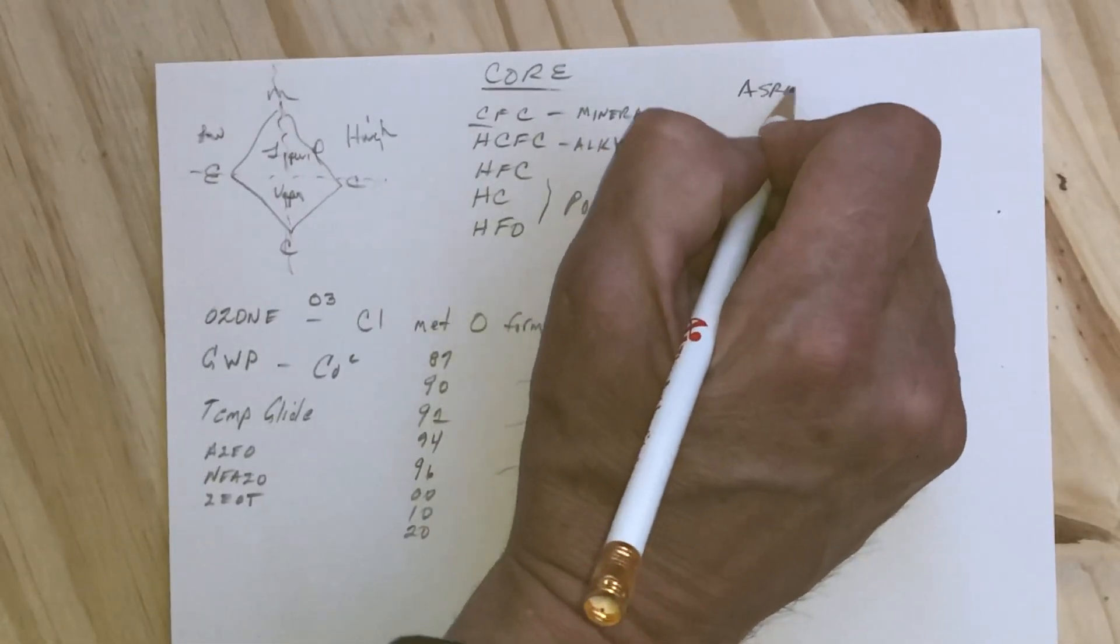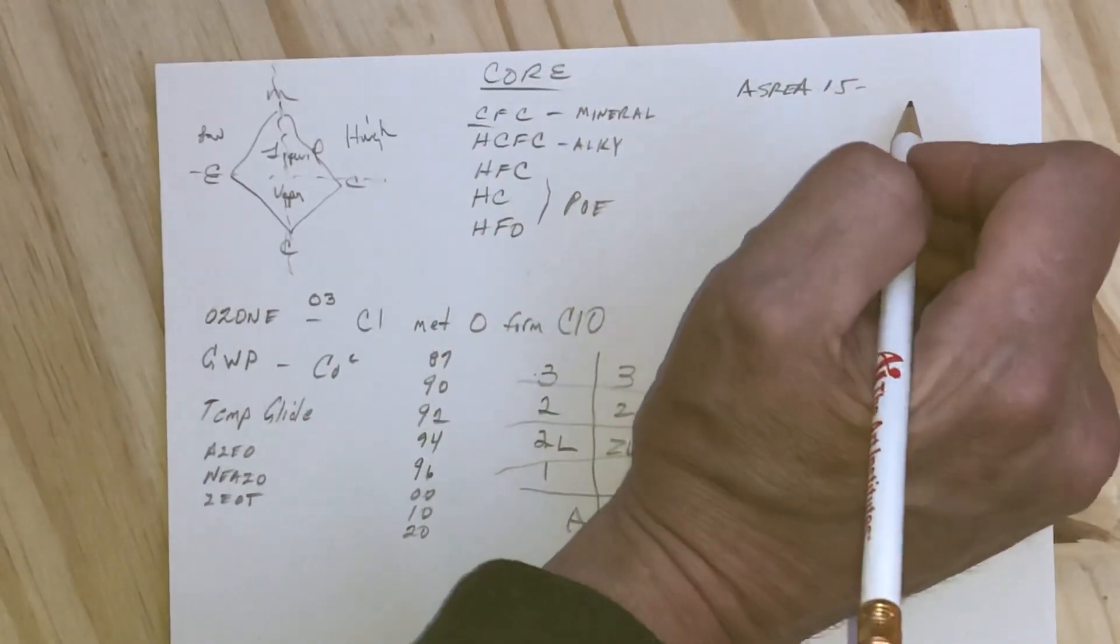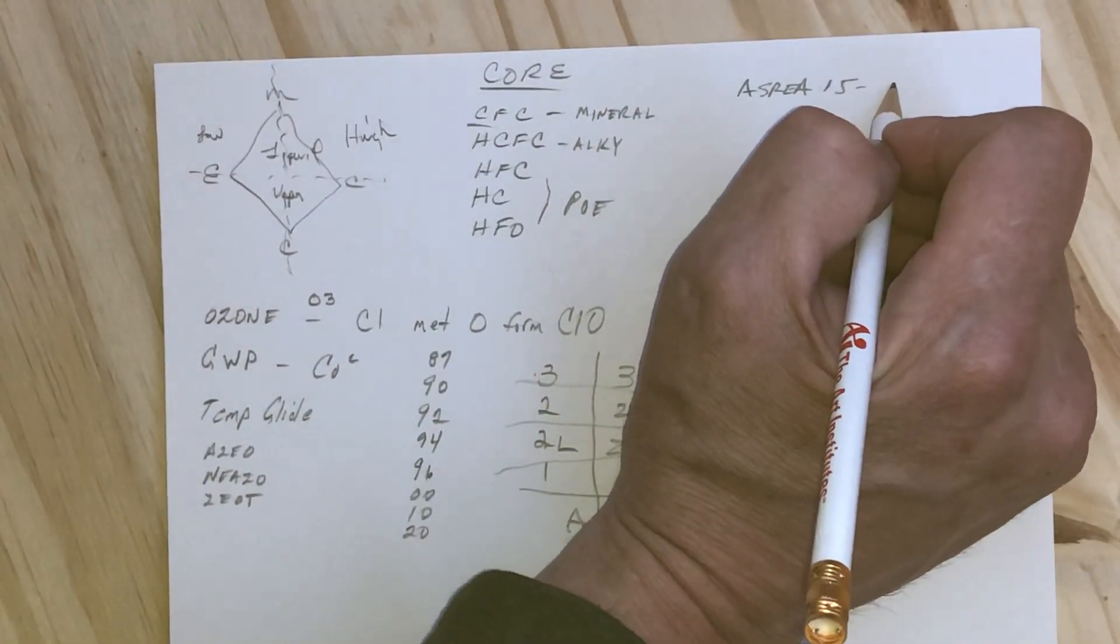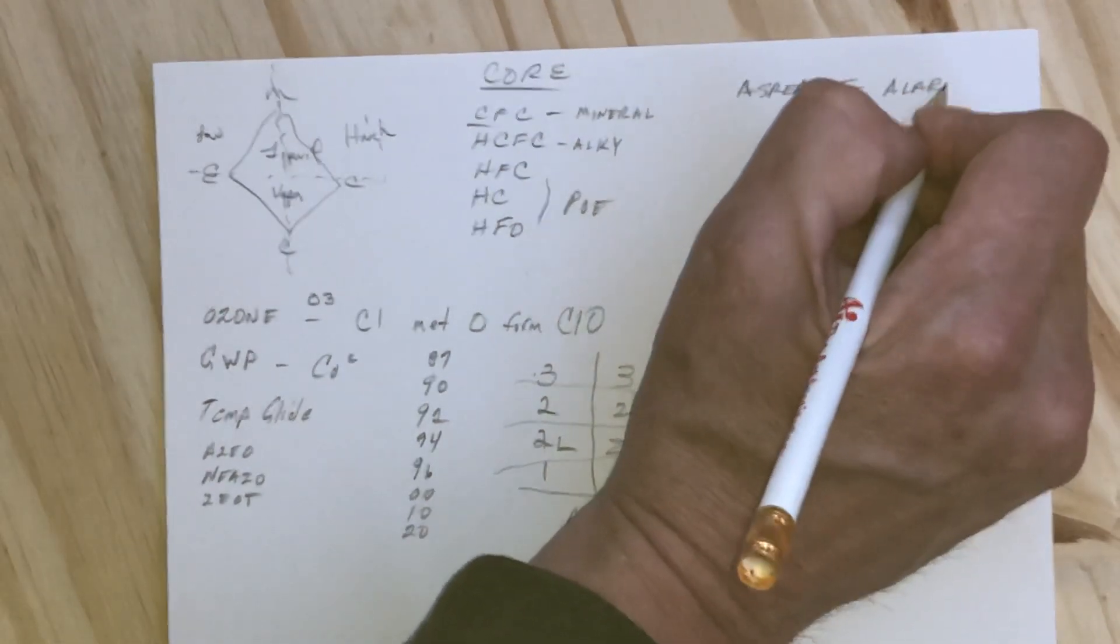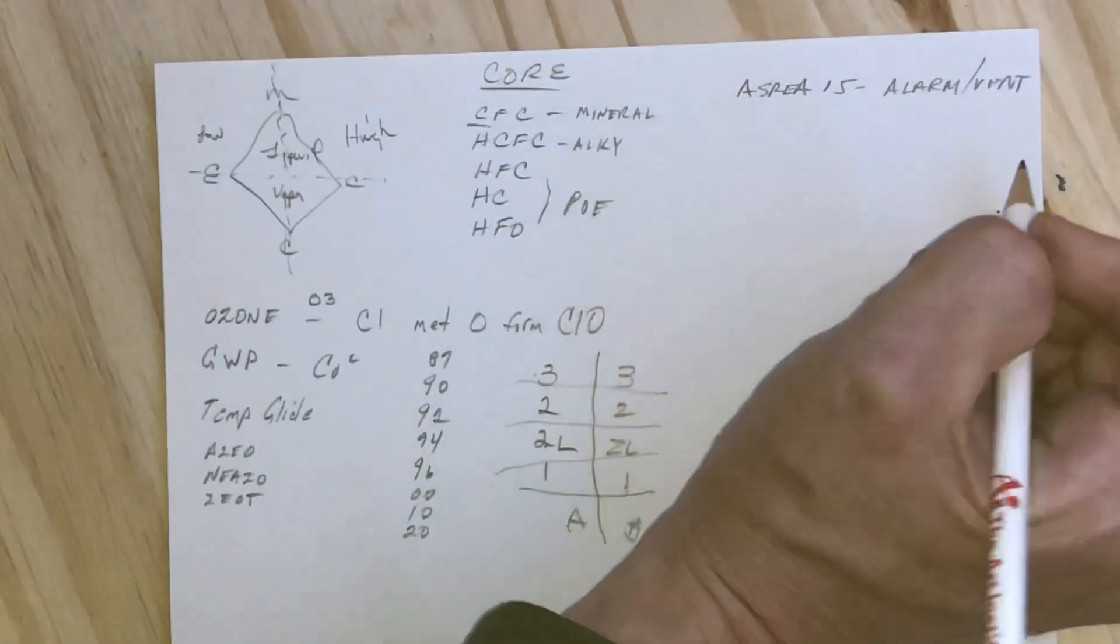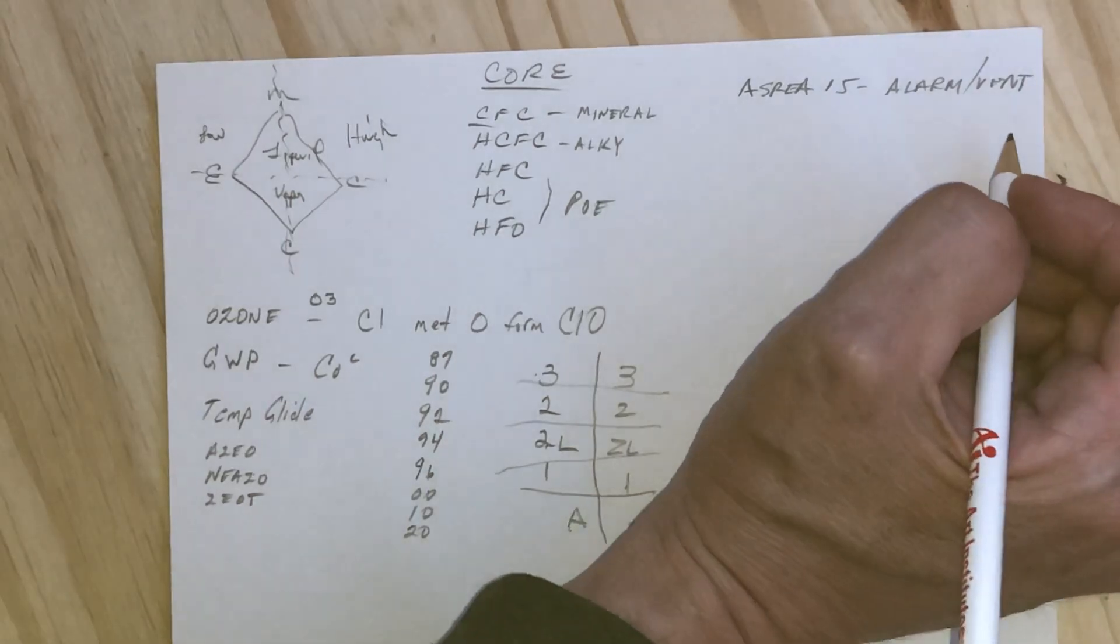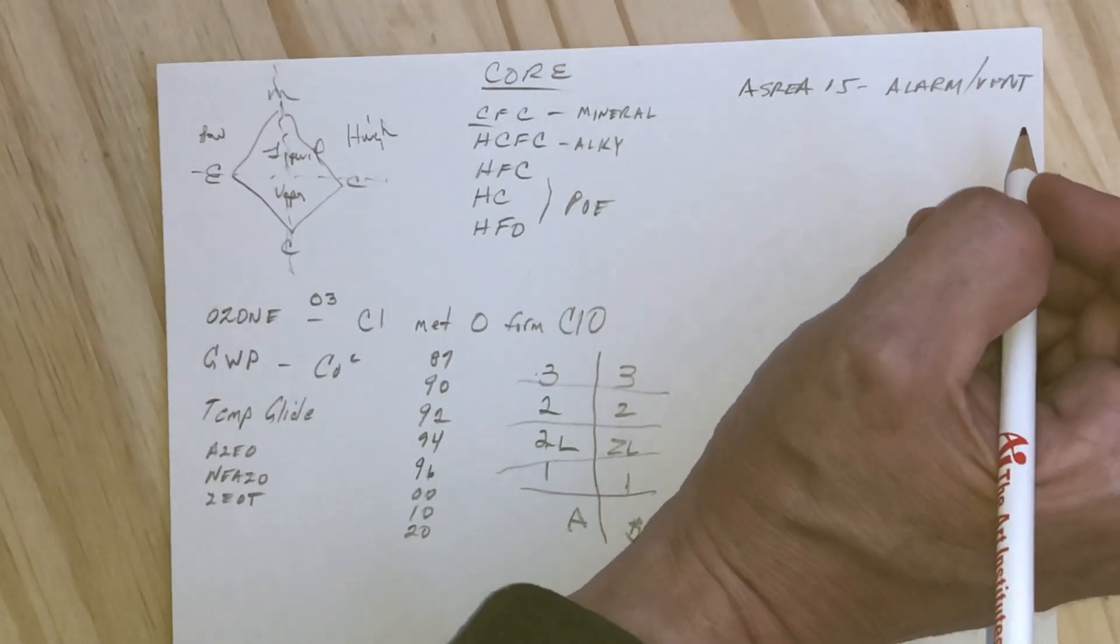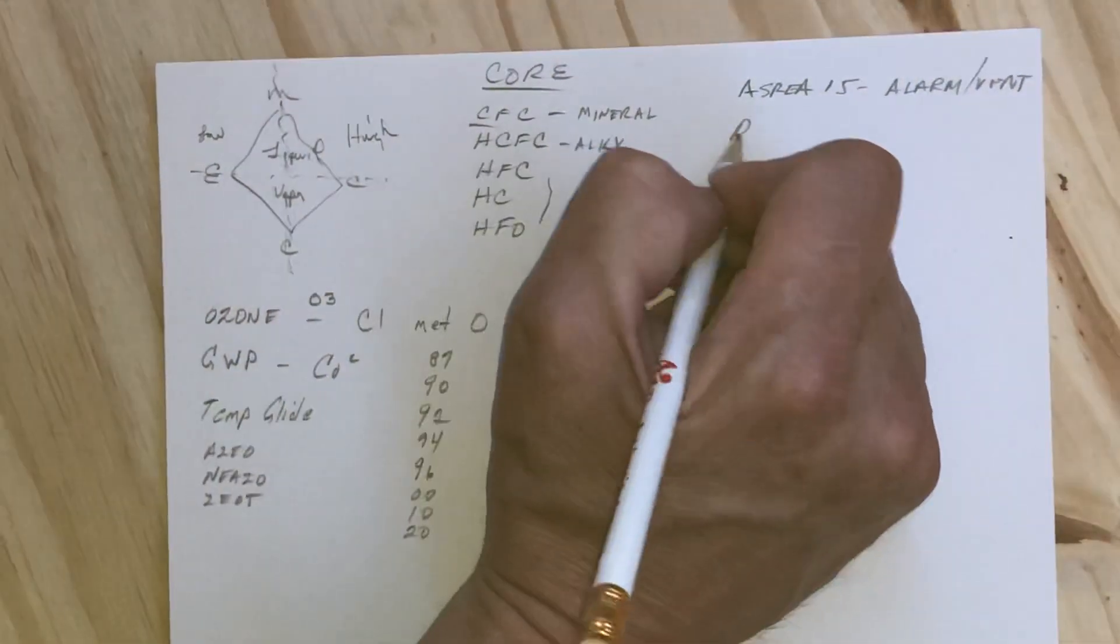Other things you should know: ASHRAE Standard 15 says if we're working with any equipment or room monitors, we should have some sort of alarm set up with a vent and audible tone. If you don't have self-contained breathing apparatus, you should evacuate and ventilate when you hear that alarm.